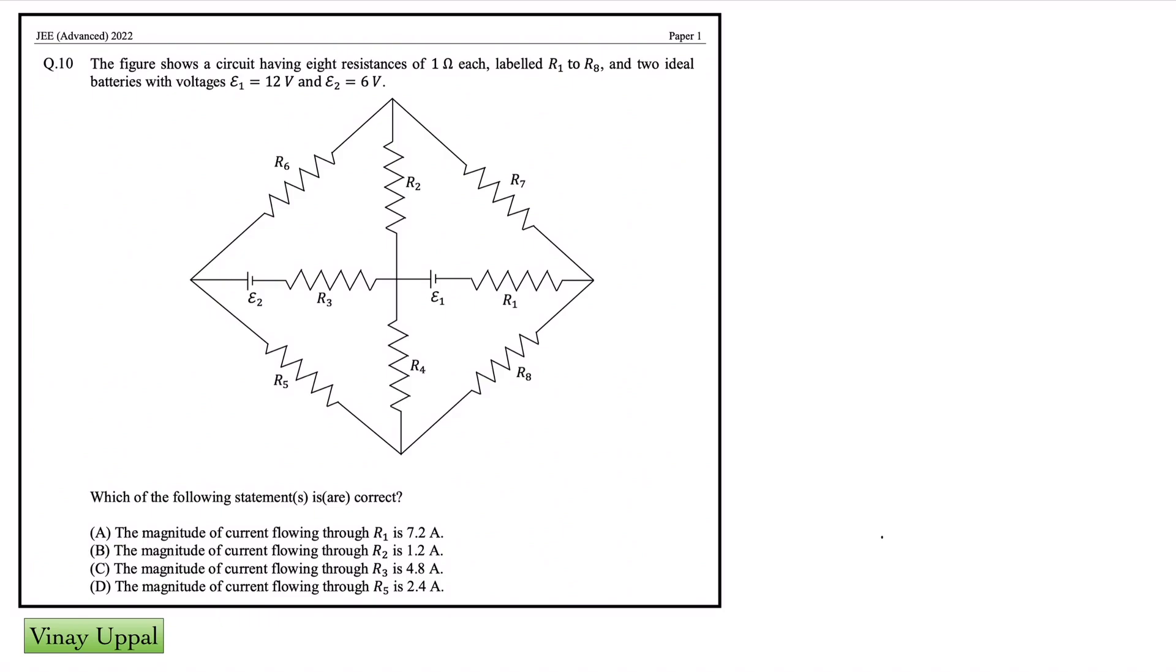JEE Advanced was on 28th August. On 26th August I had uploaded a video, the last episode of season 2, in which I had said that if the circuit is appearing in JEE, most definitely there will be some symmetry by which you should be able to simplify the circuit. And exactly that is what is going to happen here. The figure shows the circuit having 8 resistances, 1 ohm each labeled R1 to R8 and 2 ideal batteries with voltages E1 and E2.